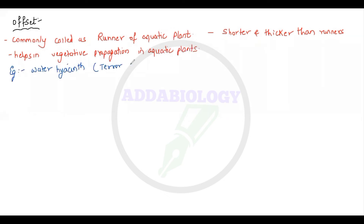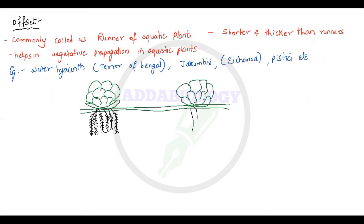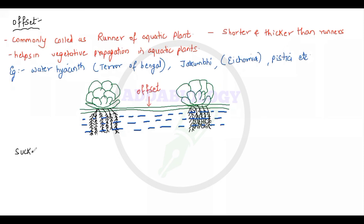Examples for offset include water hyacinth, also called the 'Terror of Bengal,' as well as Jalkumbi, Eichhornia, and Pistia. Water hyacinth was introduced to India because of its beautiful coloration and leaf shape, but it later created havoc — spreading at such a high rate that it affected water oxygen levels, resulting in the death of aquatic animals. The connecting part between two plants is called the offset.